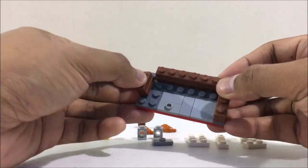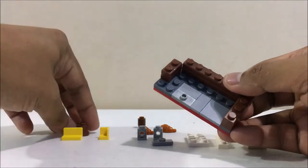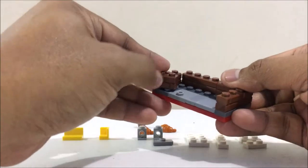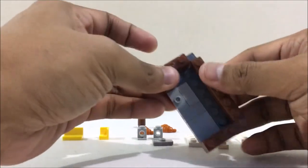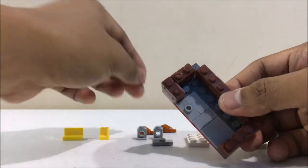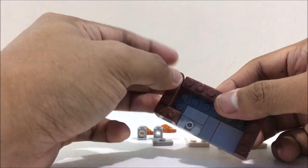Then another one here and another one here. Put the 1x1 round brick in the corner.